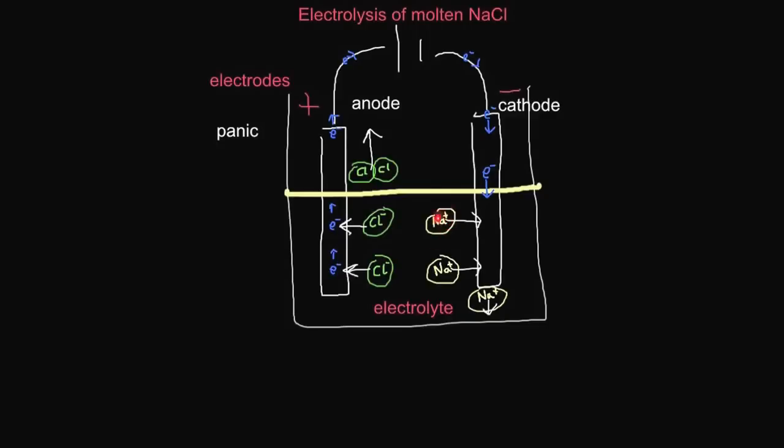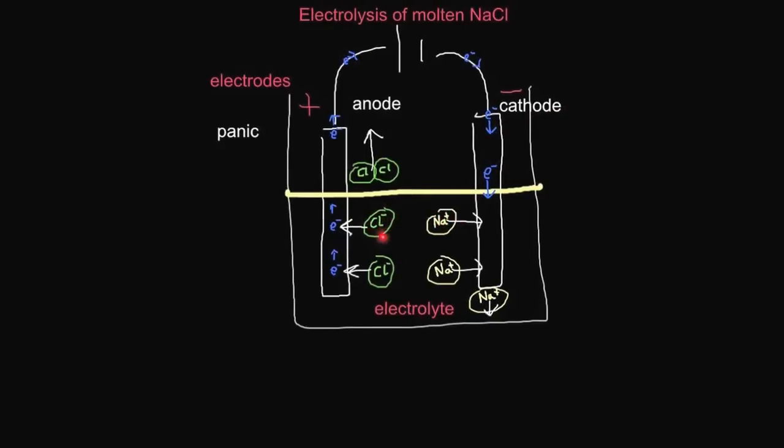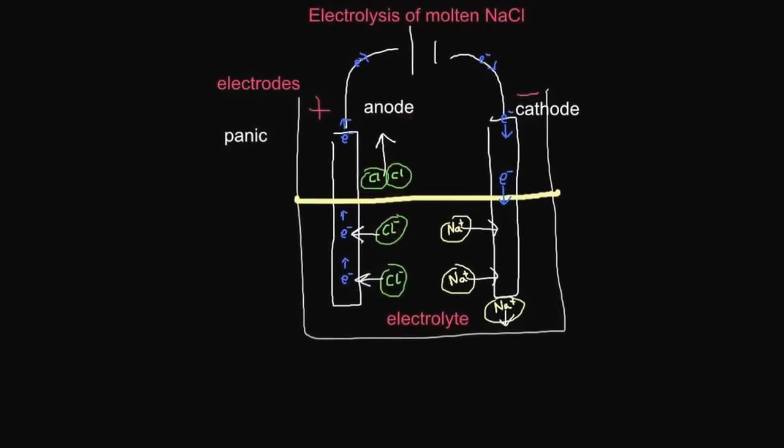Another word for the positive ions are cations, so the cations go to the cathode. A word for the negative ions are anions, so the anions go to the anode.